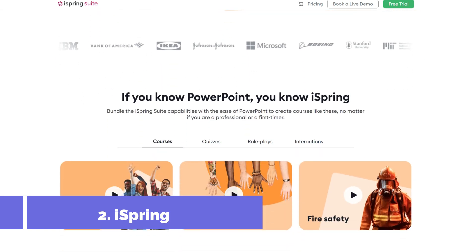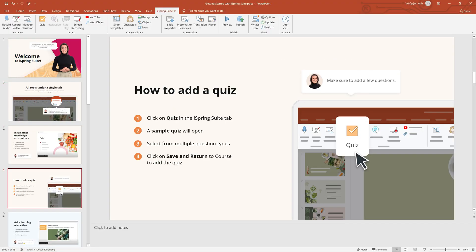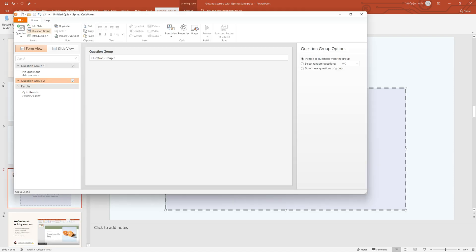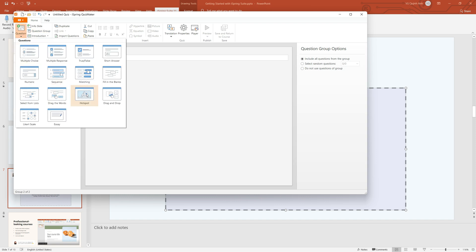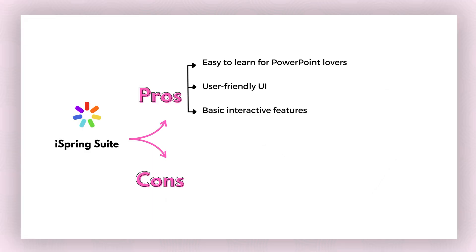iSpring Suite — a popular PowerPoint-based authoring tool. If you're already fluent in PowerPoint, then iSpring Suite is definitely a safe choice for you, because it is a level up of PowerPoint. It essentially supercharges PowerPoint, allowing you to create interactive quizzes, simulations and more, all within the familiar PowerPoint interface. And of course, it turns those boring slides into interactive masterpieces. It is easy to learn for PowerPoint lovers, and the interface is user-friendly with basic interactive features.